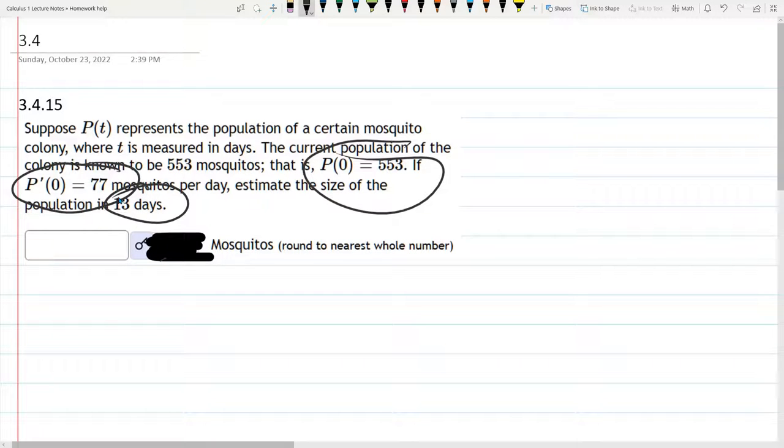And they're asking us what will the population be in 13 days. Now I want to warn you, it's very common to use exponential growth, and if you were doing that, I would use f of t is P naught e to the r times t.